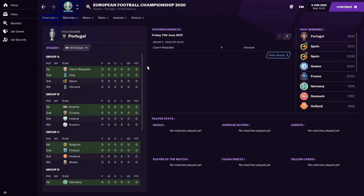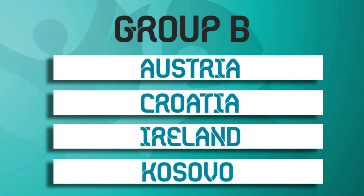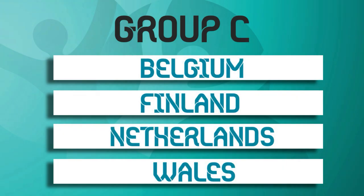We're going to go through the groups and then simulate past the group stages and into the knockout stages. In Group A, we have the Czech Republic, Italy, Spain and Ukraine. Group B consists of Austria, Croatia, Ireland and Kosovo — though Ireland and Kosovo do not actually qualify. Group C has Belgium, Finland, Holland and Wales — a pretty difficult group for Wales and Finland.